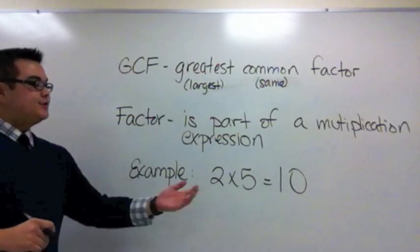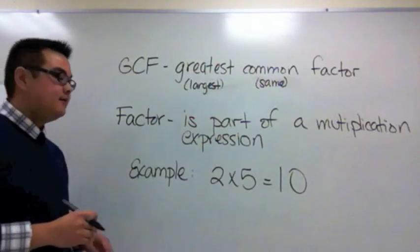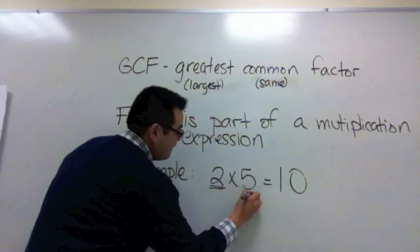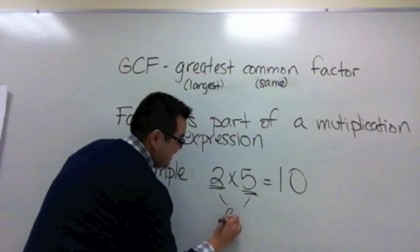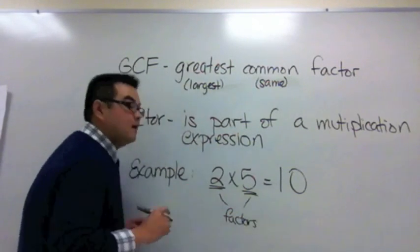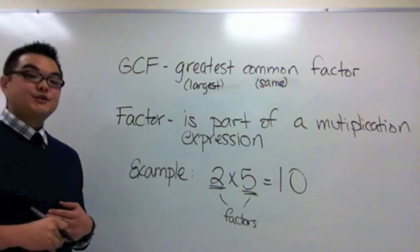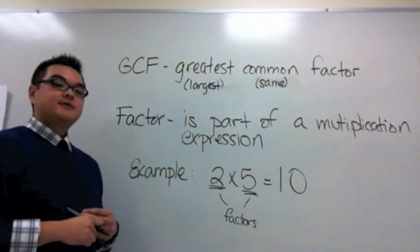So for example if I had 2 times 5 equals 10, 2 and 5 are called factors of 10. More specifically we call 2 and 5 factor pairs of 10.